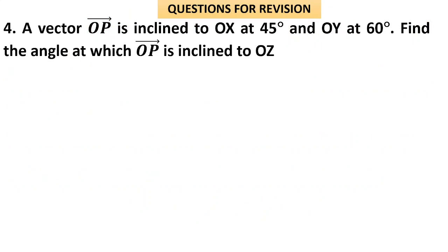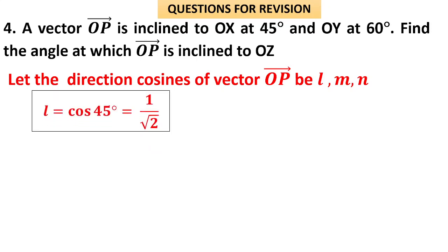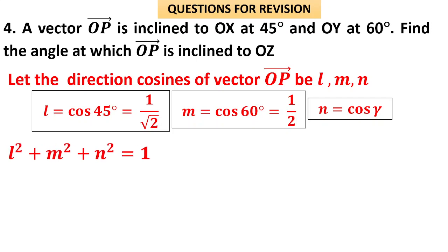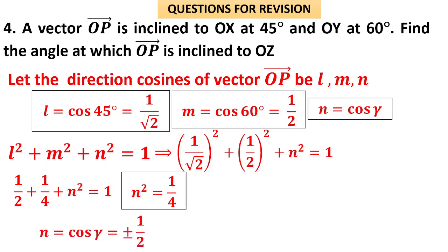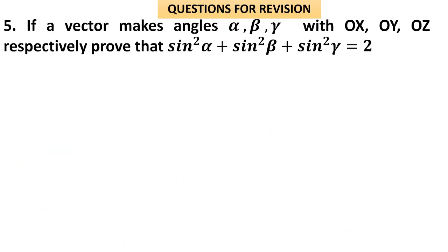Question 4: A vector OP is inclined to OX at 45° and to OY at 60°. Find the angle it makes with the z-axis. Let direction cosines be l, m, n. Then l = cos 45° = 1/√2 and m = cos 60° = 1/2. Using l² + m² + n² = 1: 1/2 + 1/4 + n² = 1, so n² = 1/4, giving n = ±1/2. Therefore cos γ = ±1/2, so γ = 60° or 120°.